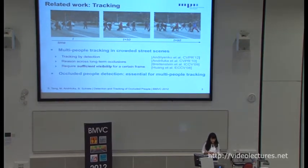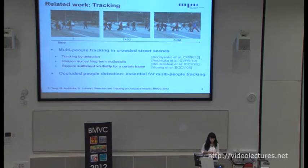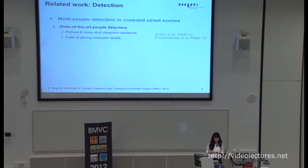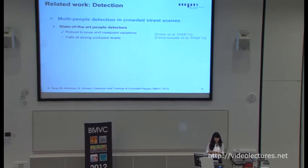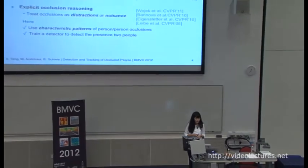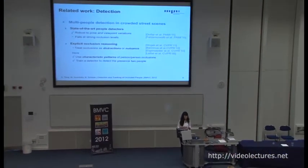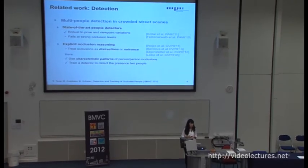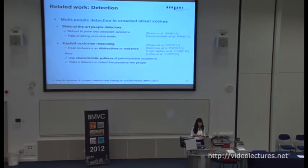We say that successful occluded person detection is a key solution for addressing the problem of multiple people tracking in crowded street scenes. State-of-the-art pedestrian detectors are able to robustly detect people under different imaging conditions, pose and viewpoint variations, but fail at strong occlusion levels. There are already several approaches proposed to detect occluded people with explicit occlusion reasoning, but they treat occlusions as distractions or nuisance and employ individual evidence from the individual person, which becomes highly unreliable when the person is occluded.